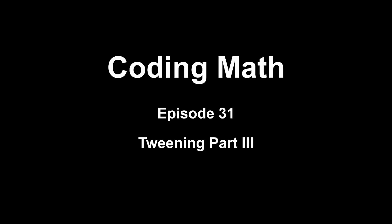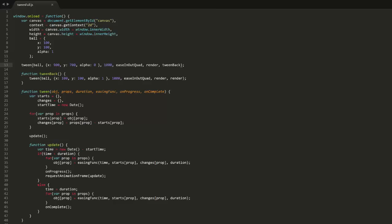This is Coding Math, Episode 31, Tweening, Part 3. In this tweening series, we first used easing formulas on their own to get an object tweening, then abstracted that using a tween function that can tween multiple properties on an object with a single call, even giving progress and completion callbacks.